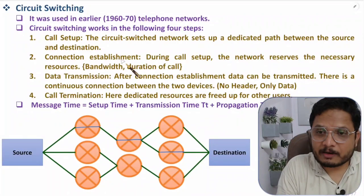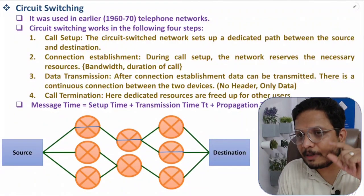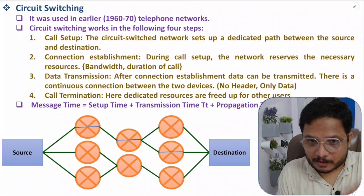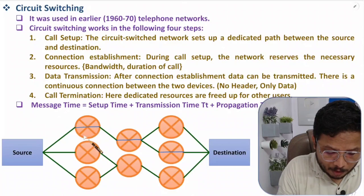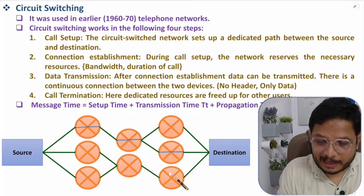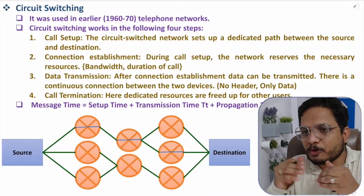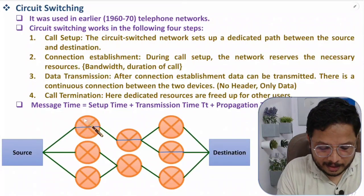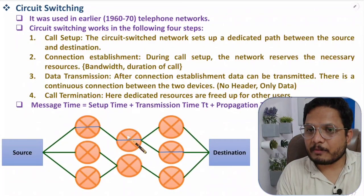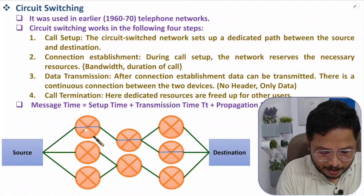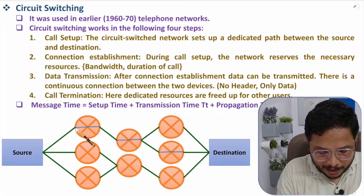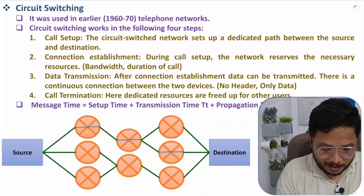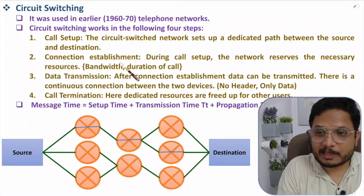The second step is connection establishment, which is done by the network admin. From India to the USA there are intermediary network admins — for example, a network admin for India, one for Europe, and one for the USA. These network admins communicate with each other and provide the circuit-switched connection, establishing the path.